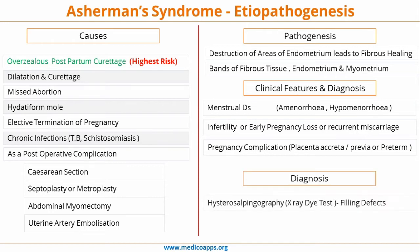For diagnosis, on hysterosalpingography — the X-ray dye filling test — you can see filling defects. However, the investigation of choice is direct visualization of the uterus by hysteroscopy.